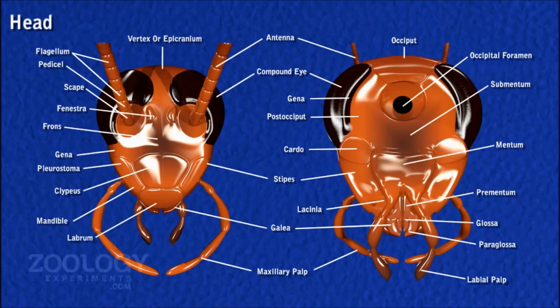The head is attached to the thorax by a short and narrow neck, which is supported by four small cutaneous plates — two situated dorsally and two situated ventrally. The head can be moved by neck muscles in different directions. The whole head is covered by a number of cutaneous plates constituting its exoskeleton; the fused margins are visible as sutures. The vertex of the head is formed by two epicranial plates.